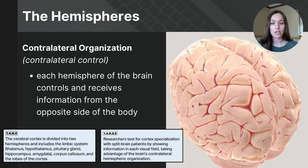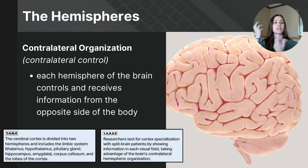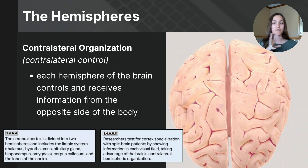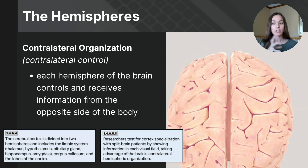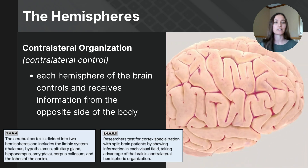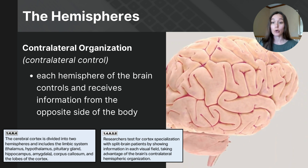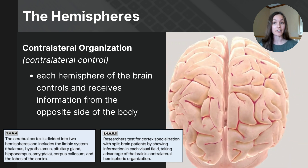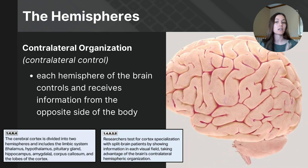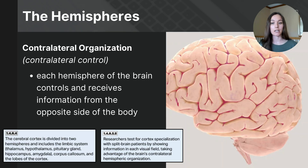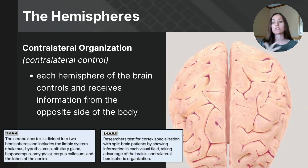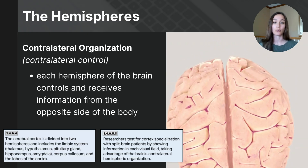Similarly, sensory information from the right side of the body is processed in the left hemisphere. This contralateral control allows for efficient coordination and integration of sensory and motor functions across the body, ensuring balanced and synchronized movements and perceptions. In stroke patients, this is evident when damage to one hemisphere results in impairments on the opposite side of the body — for example, a stroke in the left hemisphere often leads to paralysis or weakness on the right side.